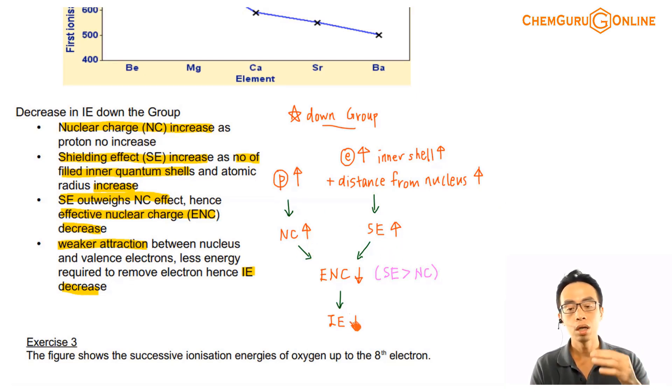We can, based on the outcome, conclude which effect is more important. Another way that we can do to help us remember that is, I can say that there are two factors here. Increase in distance from the nucleus, which means that the attraction is weaker, plus increase in the number of inner shell, so the shielding effect increases.